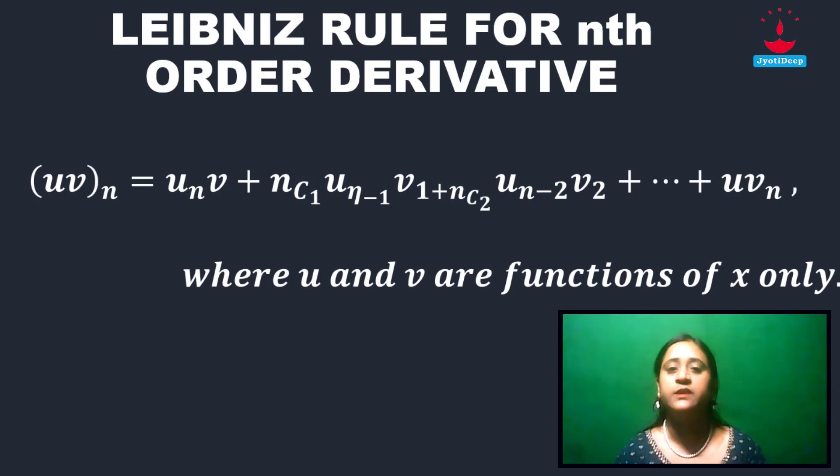Here we have u and v. U derivatives are u1, u2, dot dot dot, u_n. Similarly v1, v2, dot dot dot, v_n. So this is the Leibniz rule. Leibniz aamade die che e formula die directly jekono function er nth order derivative bier kora jae.